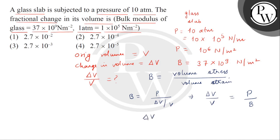We'll put the values. So pressure is 10 to the power 6 and bulk modulus is 37 multiplied by 10 to the power 9. So from here we'll get this value, 2.7 multiplied by 10 to the power minus 5.